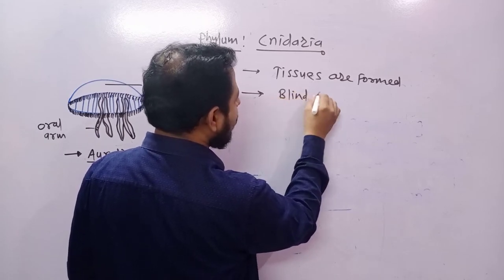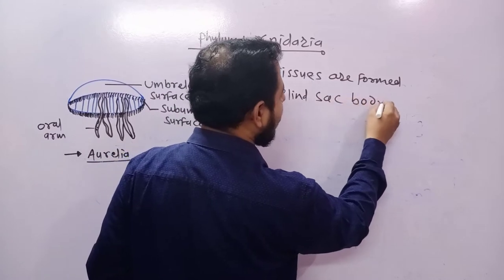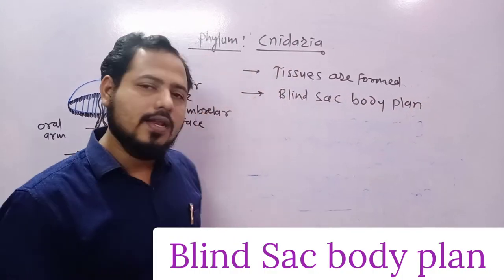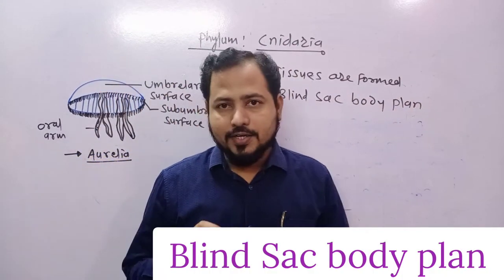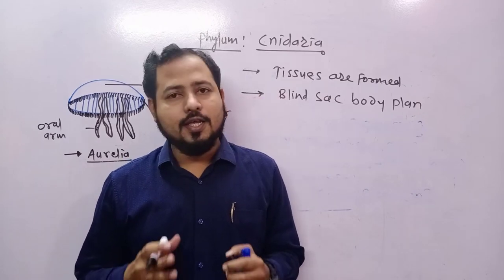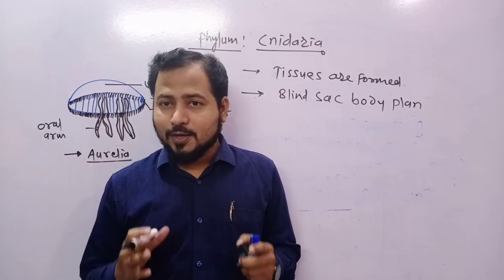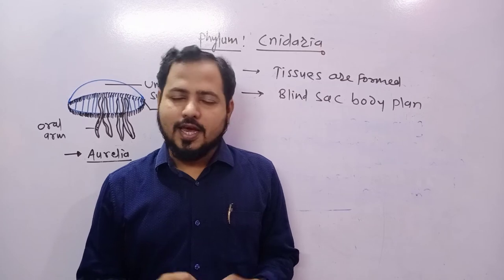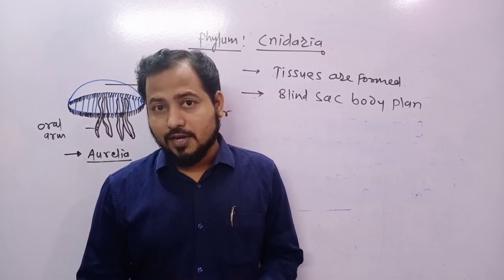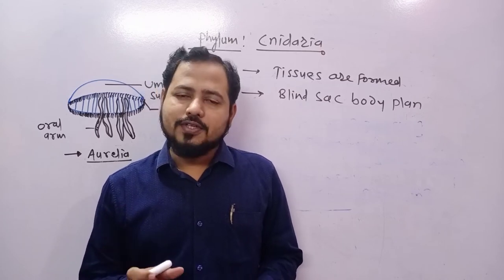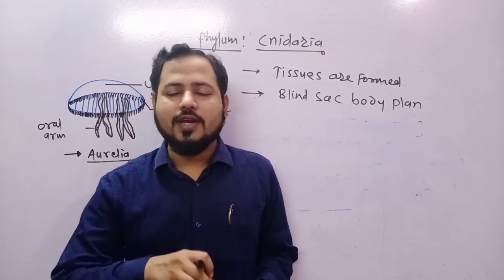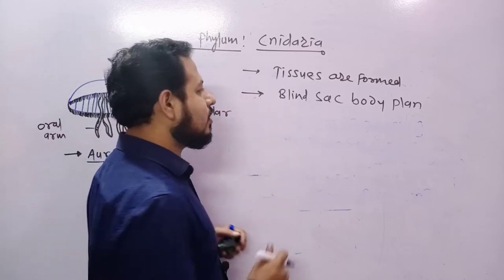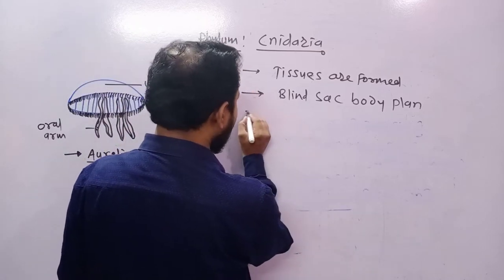These animals show a blind sac body plan. This means the body has only one opening which functions as both mouth and anus. There is a single opening through which entry and exit of materials takes place. That is why they are said to have a blind sac body plan.